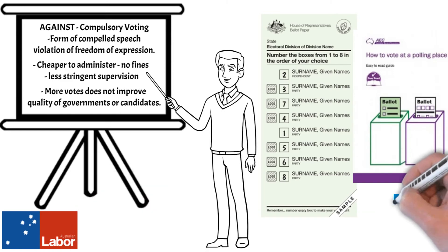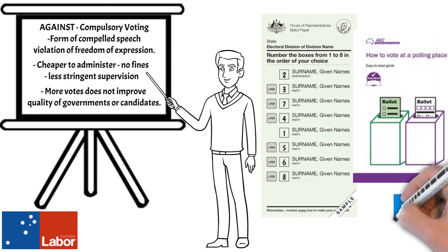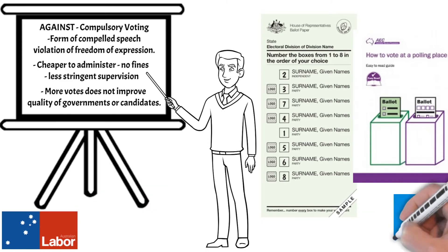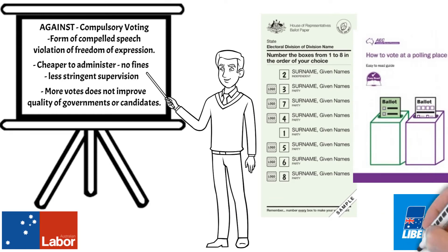The Commonwealth Electoral Act was passed in 1902. Since then, the electoral process has been administered by several different departments. The Australian Electoral Commission was introduced in its current form in 1984 for the purpose of running and administering elections at a federal level. Each state has its own equivalent electoral authority. These are politically neutral and are publicly funded.